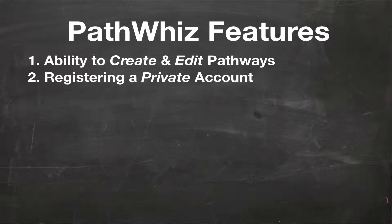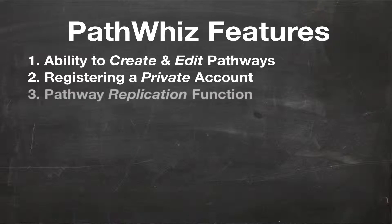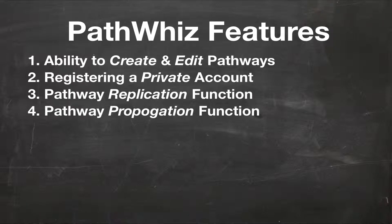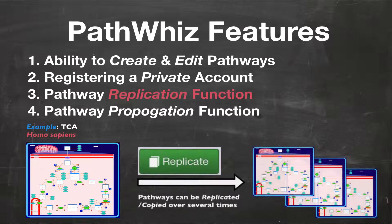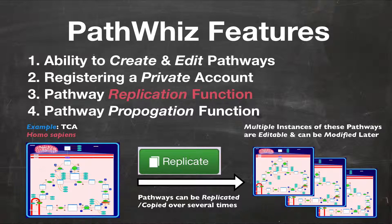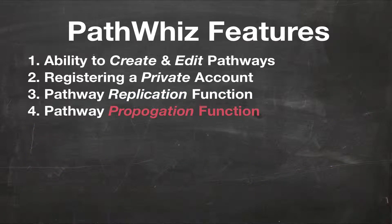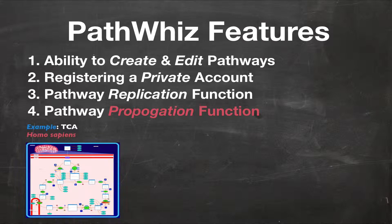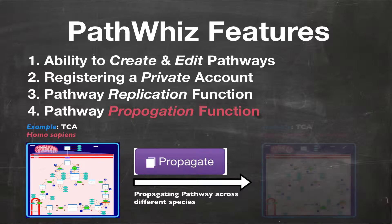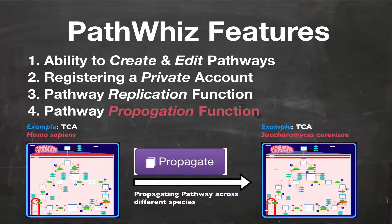Another set of features unique to PathWiz are its pathway replication and pathway propagation functionalities. The pathway replication function allows existing pathways to quickly be duplicated so that they can be edited, altered, or modified in any way that you desire, saving time as you don't have to draw a pathway from scratch. The pathway propagation function allows existing pathways to be automatically propagated across species. For example, we could start with a TCA cycle in humans and propagate the TCA pathway to yeast without having to draw in all the new proteins and reactions. Later in part 2 of this series, I'll show you how to do this.